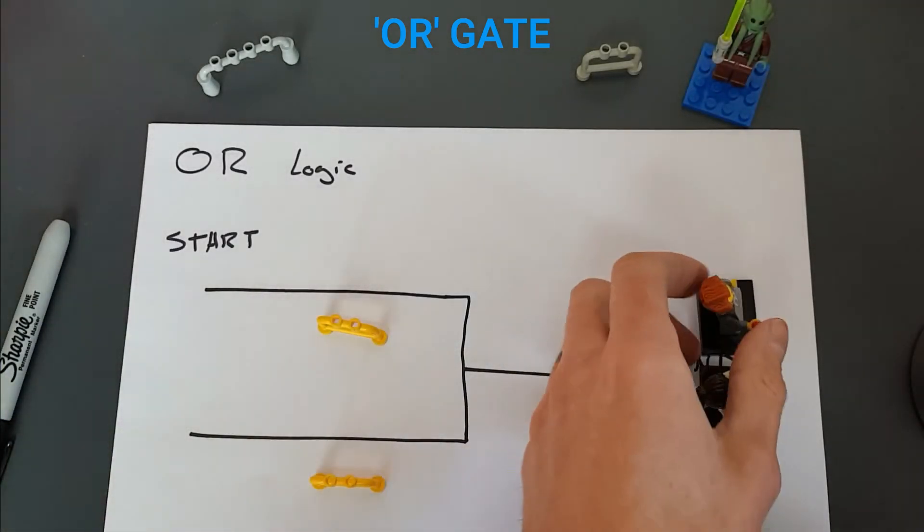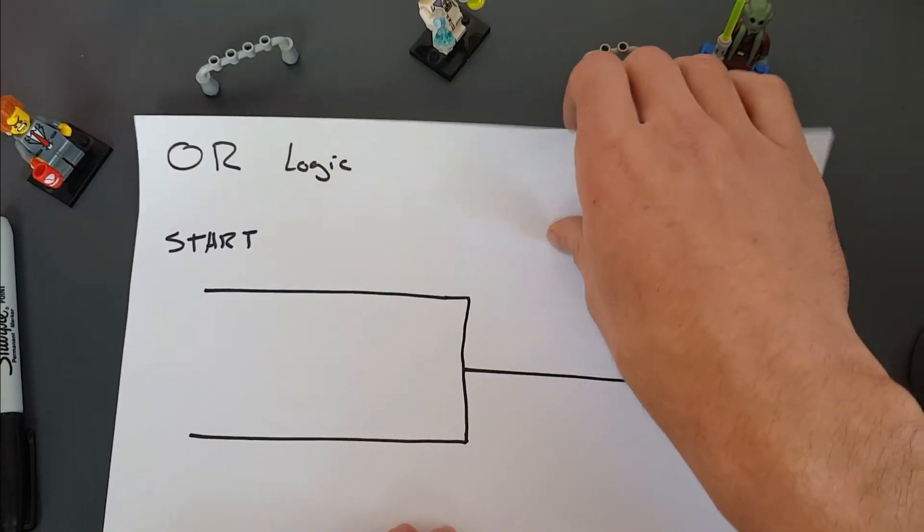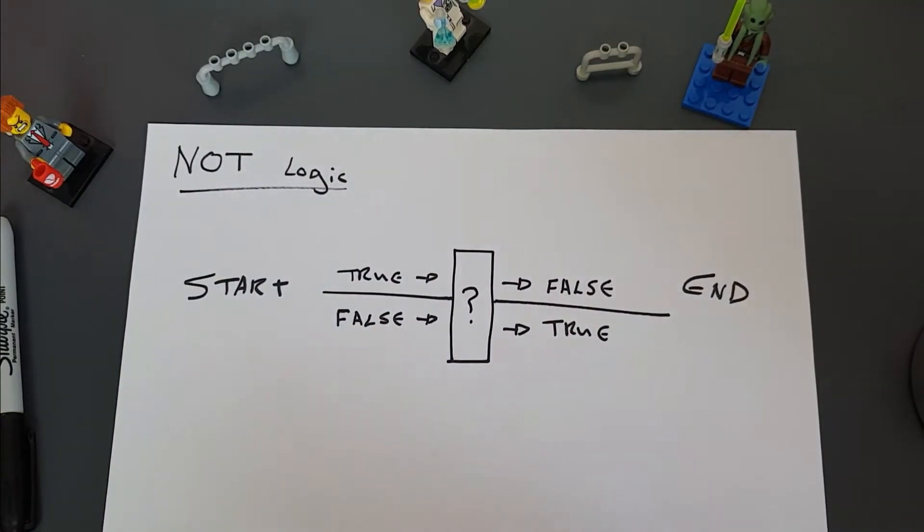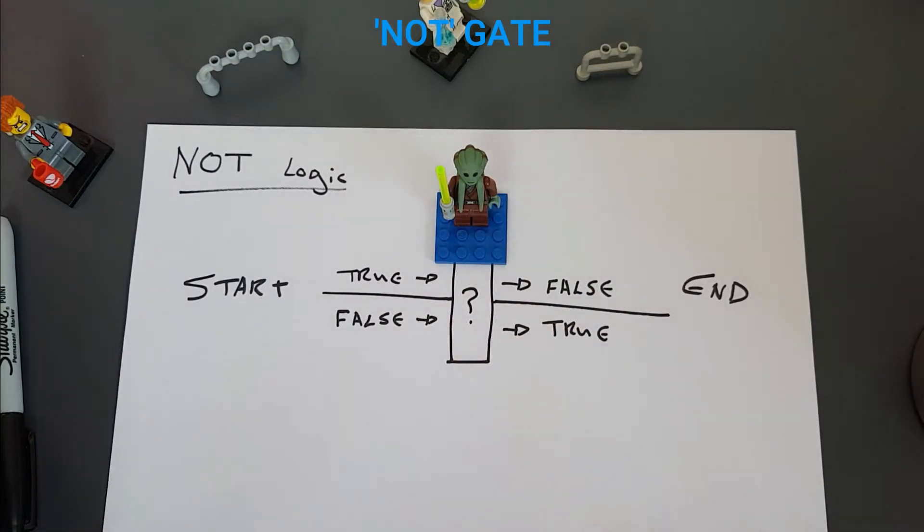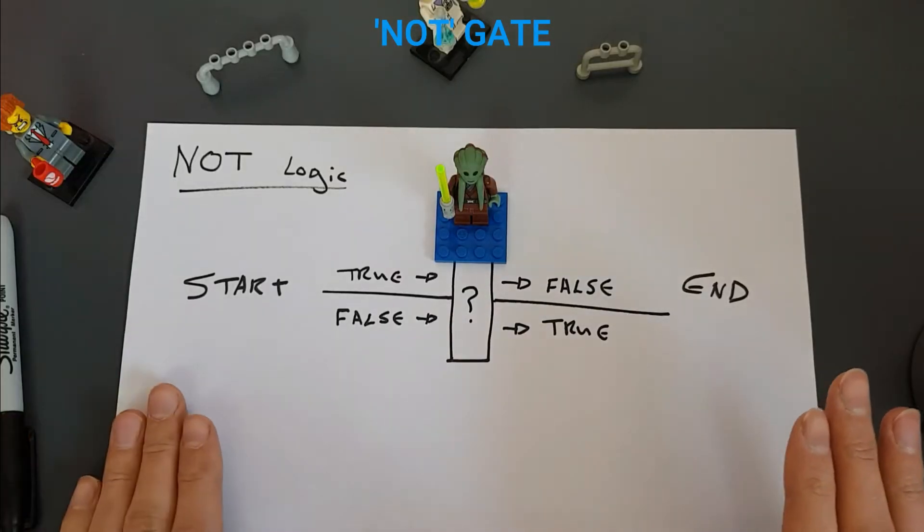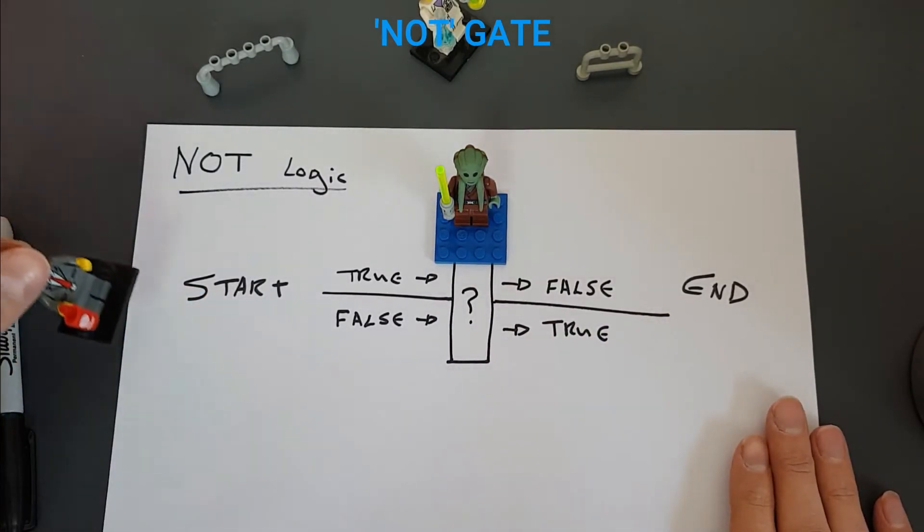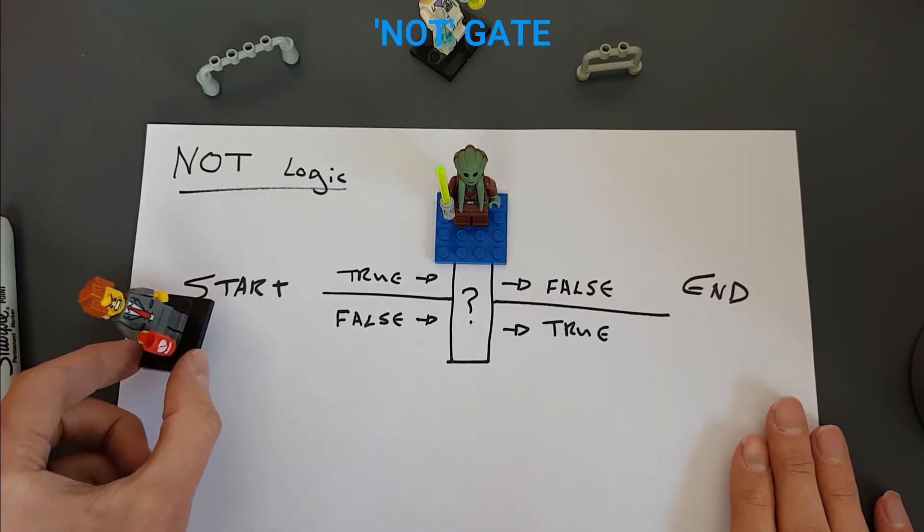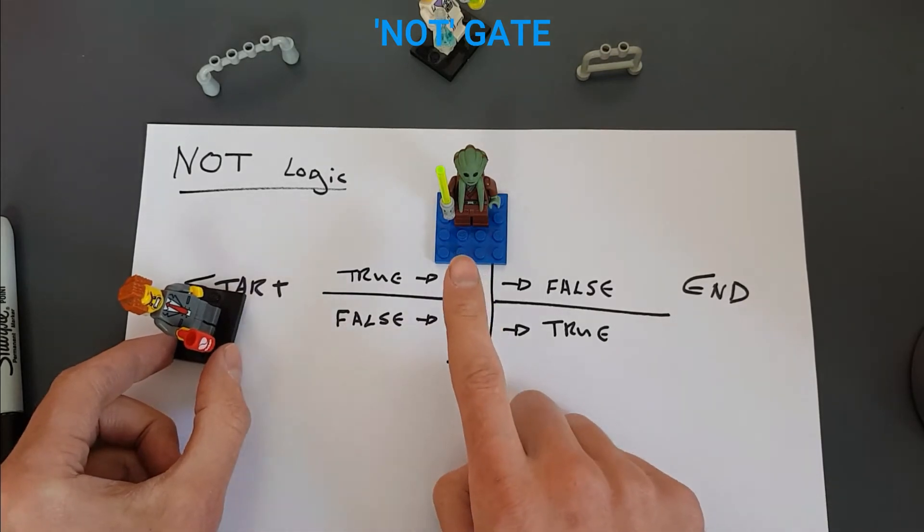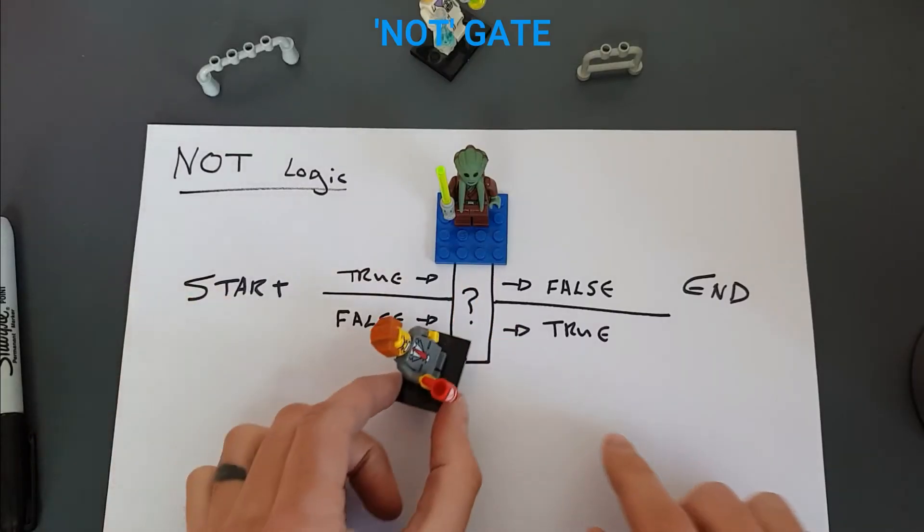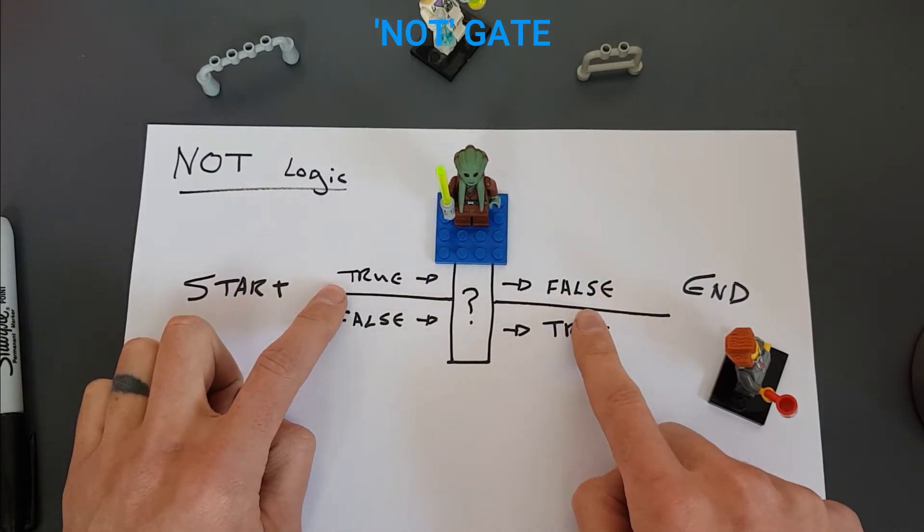Then we get to NOT, and NOT is a little bit more tricky. NOT basically is like having this freaky guy with the lightsaber. And there's only two conditions here. If President Business is coming along and he's carrying a true state at the start, NOT, when he gets to this gate, he sees the freaky guy with the lightsaber and he changes his mind when he goes through it because he got scared. And so he started off TRUE and he ended up FALSE.